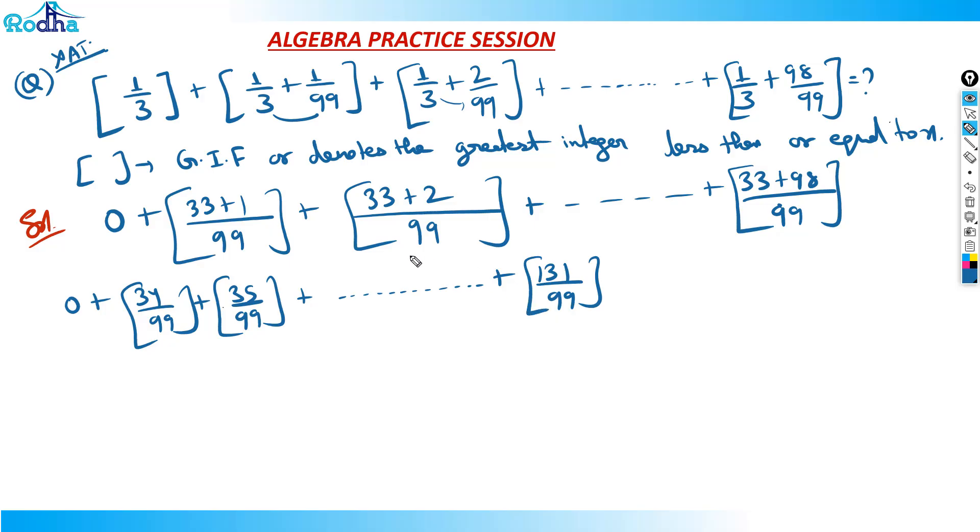It's quite obvious that somewhere a point would have come where the number was 99 by 99, and from here the value of 1 will start. 99 by 99 is 1. After this, 100 by 99 is again 1. This 1 will appear how many times? From 99 to 131, if you count, it is 33 times. And all the previous will be 0, because till 98 by 99, it is 0 point something, so its integral part is 0. That means 33 is the answer.